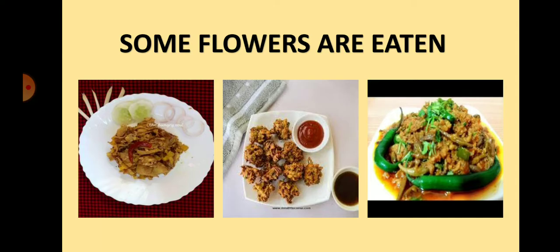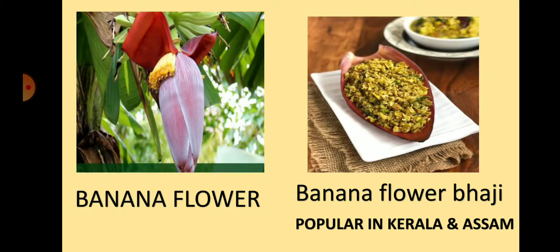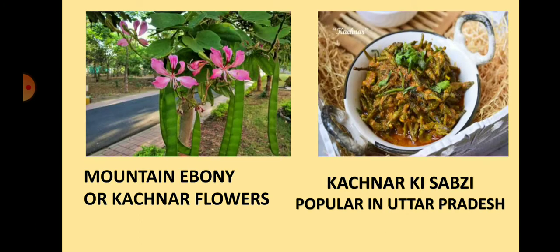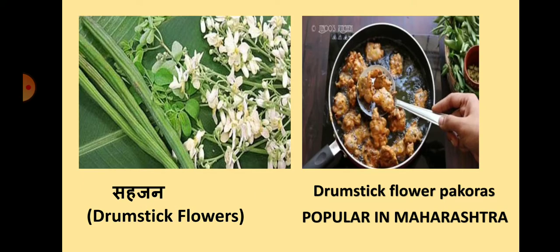Children, do you know that some flowers are eaten as vegetables? Look here the picture of the banana flower. Banana flower bhaji is very popular in Kerala and Assam. Mountain ebony or Kachanar flowers are also eaten as vegetables and are very popular in Uttar Pradesh. Drumstick flowers are popular in Maharashtra and are taken as pakoras.